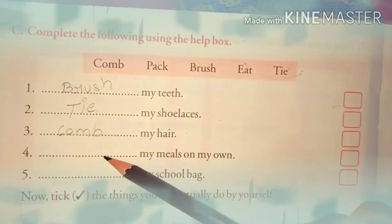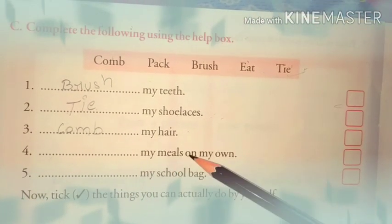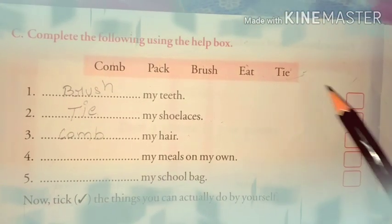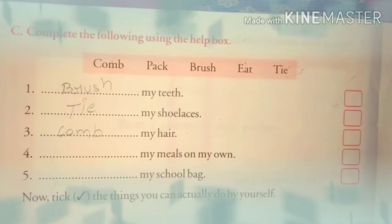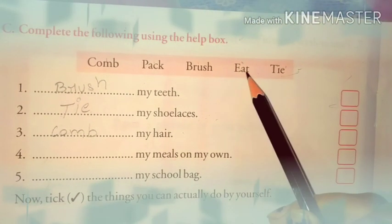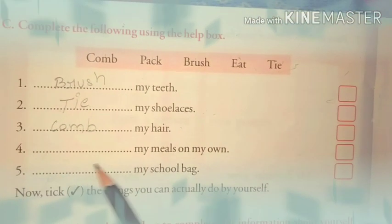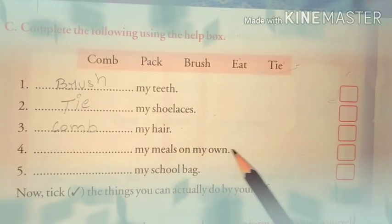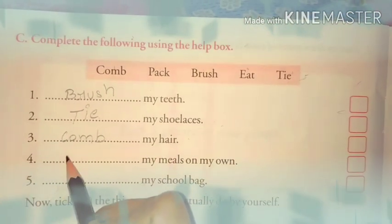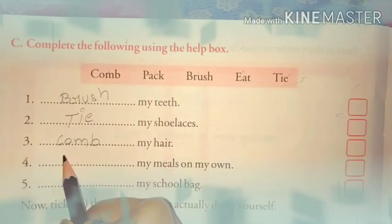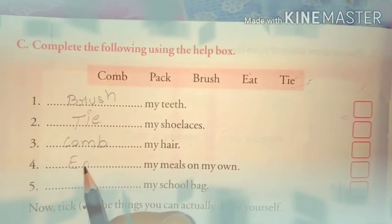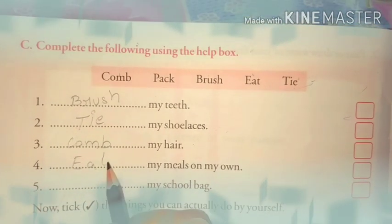Fourth: dash my meals on my own. So what will come here children? Yes, eat. Eat my meals on my own. So write over here: eat. The spelling of eat is E-A-T.